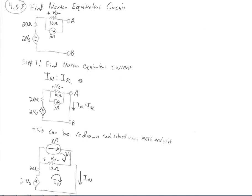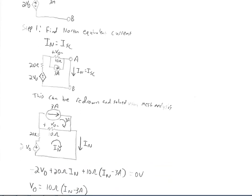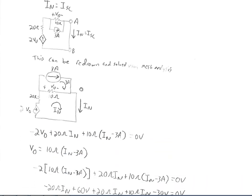The definition of the Norton equivalent current is that it equals the short circuit current. Here we have a short added between A and B, and we're finding what current flows through that short. We can analyze this using standard practices by redrawing the circuit, simply moving the 3 amp current source up above, which makes it more obvious that we have two meshes.